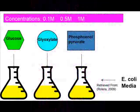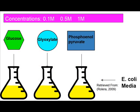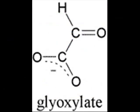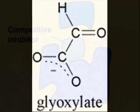Three different compounds — glucose, glyoxalate, and phosphoenolpyruvate — were added to the bacterial media with the intention of stopping isocytritolase production. It was ultimately shown that glyoxalate had the greatest inhibitory effect on isocytritolase production.